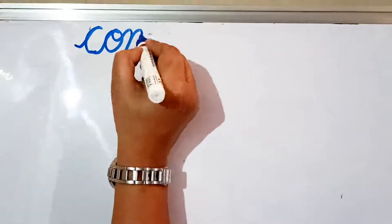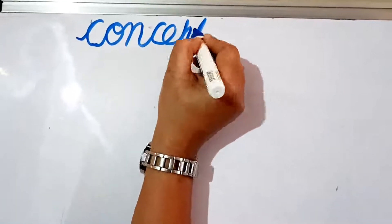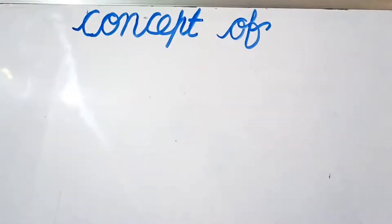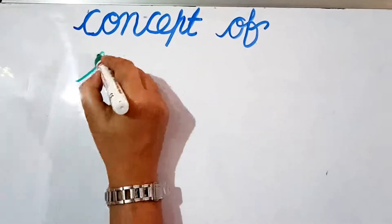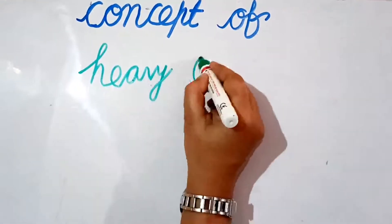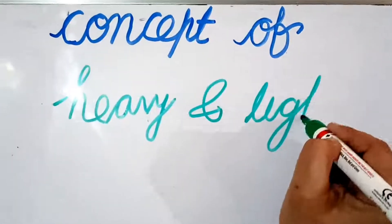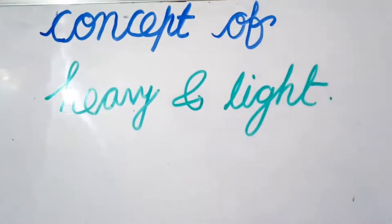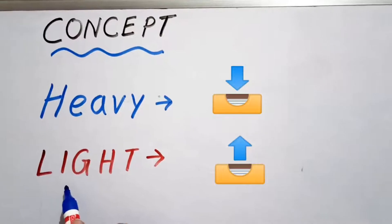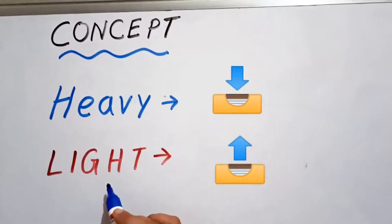Hello children, today we will learn the concept of heavy and light. Heavy or light — these are opposite words.